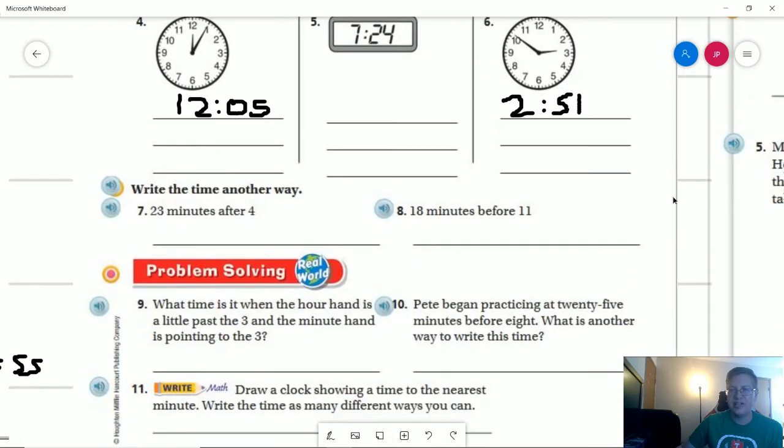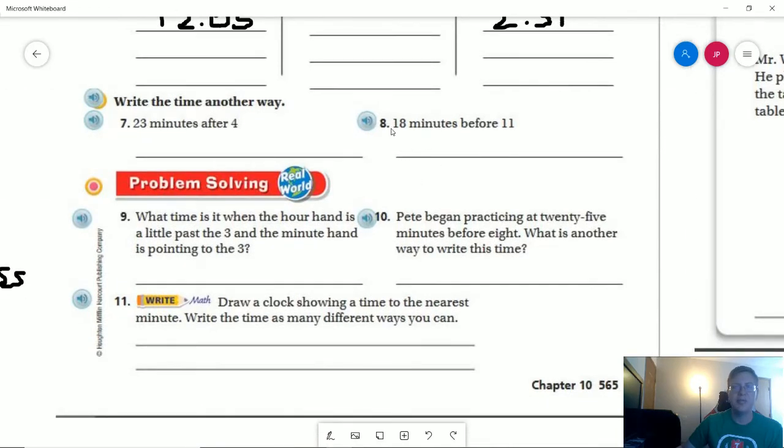Let's go ahead and look at number eight. I'm going to slide this up a little bit. So 18 minutes before 11, we are going to be in the 10 o'clock time window. 18 minutes, we can do 60 minus 18. That would give us 42. So 10:42 for the time.